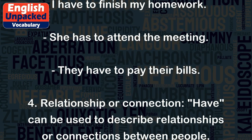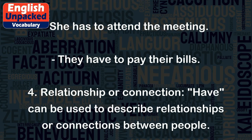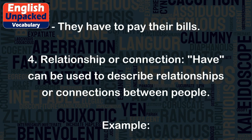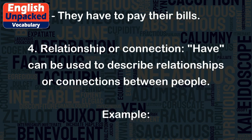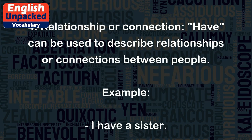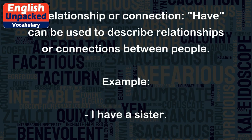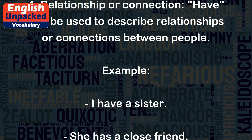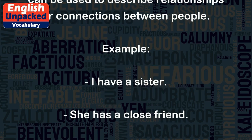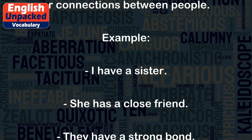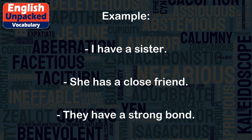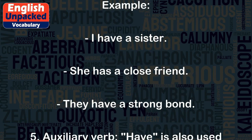4. RELATIONSHIP or CONNECTION. HAVE can be used to describe relationships or connections between people. Example: I have a sister. She has a close friend. They have a strong bond.